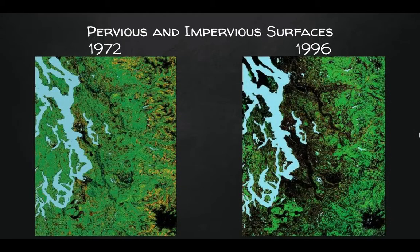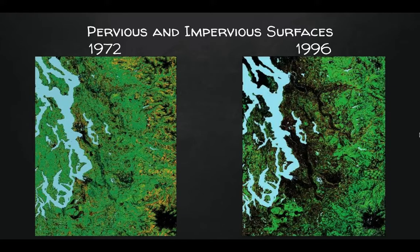These two pictures show the conversion of the Puget Sound area from pervious surfaces, shown in green, to impervious surfaces in black. This means that all the rain falling on the black areas of the maps runs off the surface instead of being purified underground. The difference in time between these two images is 24 years, and it's been about 24 years since the most recent picture, so take a moment to think about how today's picture might look. Do you think there would be more or less green in the picture?